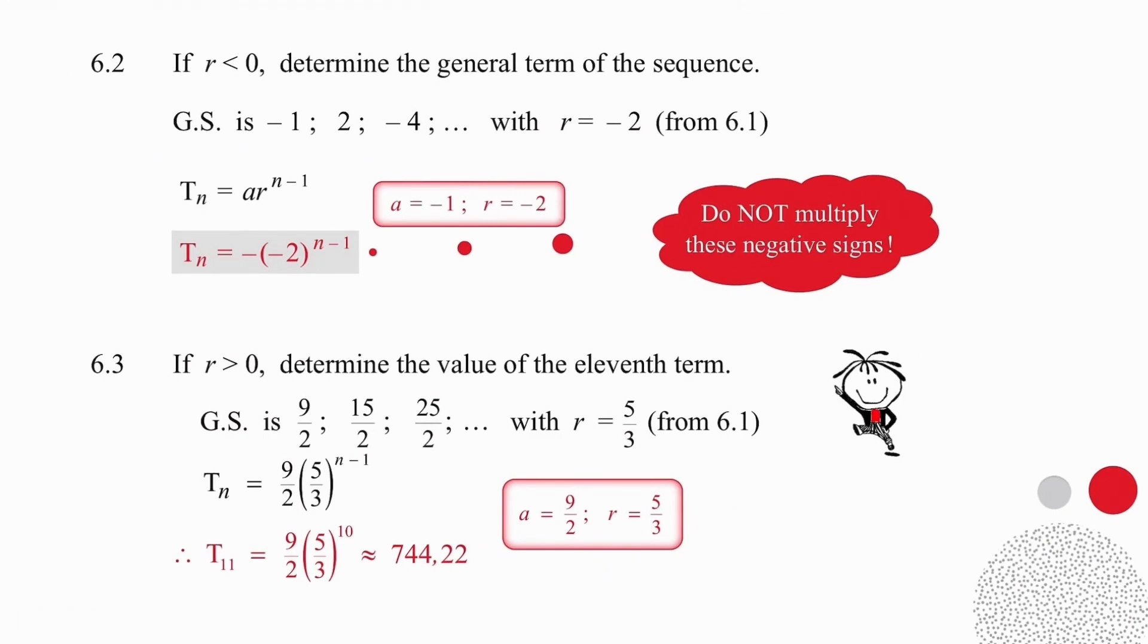In question 6.2, we need to, focusing on a negative ratio, determine the general term of the sequence. So we already know that the sequence generated by negative 2, r equals negative 2, is going to be minus 1, 2, minus 4. The a value is minus 1, the r value is minus 2, and so we can put that together very easily. Do not be tempted to multiply those negatives together. It will cause a breakdown and your answer will be completely wrong.